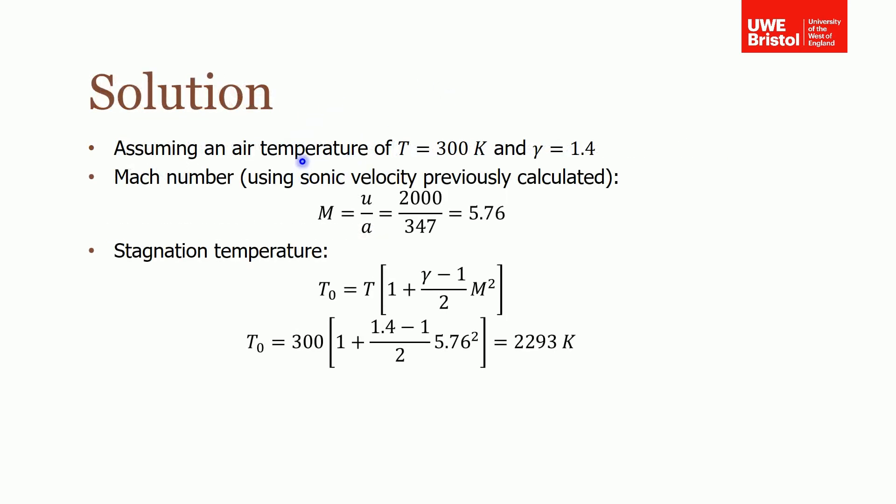So I've assumed an air temperature again of 300 Kelvin and that gives me a gamma of 1.4. Now first, to find the stagnation temperature we're going to use this relationship which includes the Mach number. So first of all we need to find that.